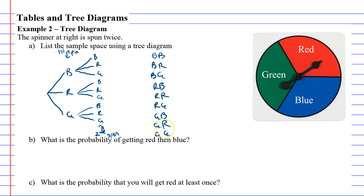Question B: What is the probability of getting red then blue? Okay, so we'll do that in green. There's only one that's red then blue, and all together there are nine possibilities. So the probability of getting red then blue is one out of nine, or 1/9.